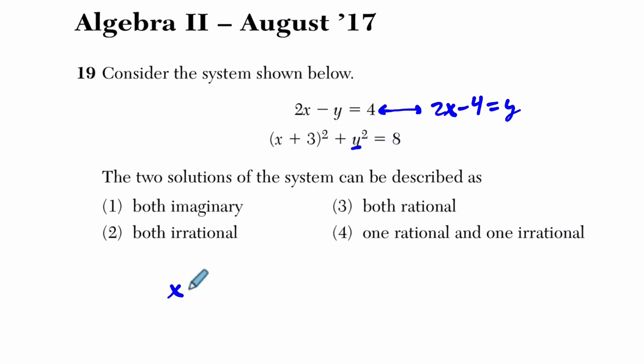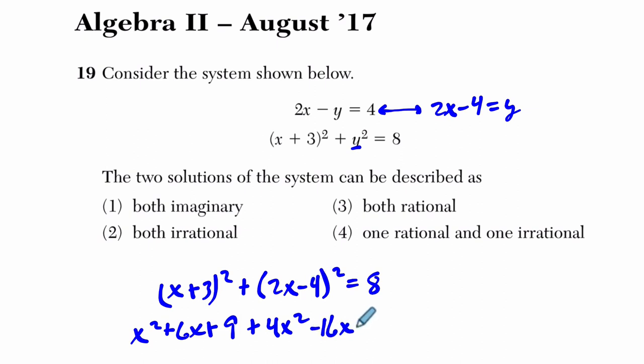I can substitute it. So I'm going to get (x + 3)² + (2x - 4)² = 8. So now I'm going to square x + 3, so it's x² + 6x + 9 plus, I'm going to square this thing 2x times itself is 4x². And then I'm going to have 2x times -4 twice, so it's -8x and another -8x. It's -16x + 16, because -4 times -4 is 16, so -16x + 16 = 8.